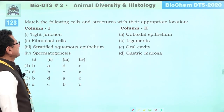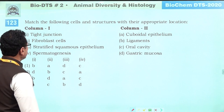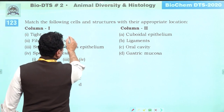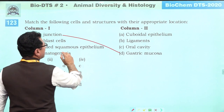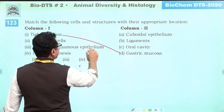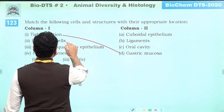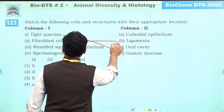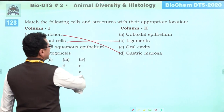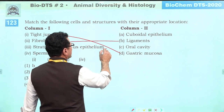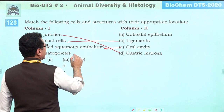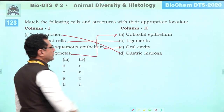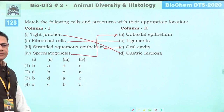Match cells with their location: tight junctions — gastric mucosa; fibroblast cells — ligaments (produce collagen fibers); stratified squamous epithelium — buccal cavity; germinal epithelium (cuboidal, site of spermatogenesis) — testis.